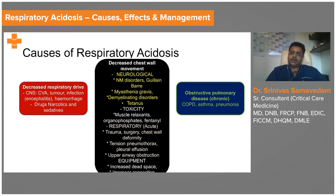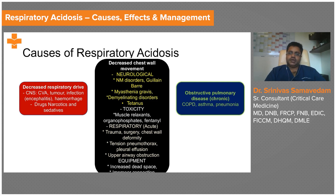Trauma to the chest, surgery, chest wall deformities, tension pneumothorax, pleural effusions, or upper airway obstruction can all limit ventilation and decrease alveolar ventilation, resulting in an increase in circulating carbon dioxide in the blood.